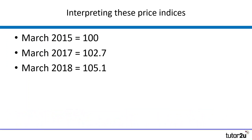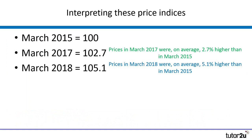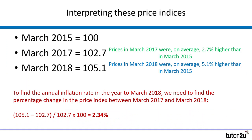So what does this mean? In March 2017, prices were 2.7% higher than in March 2015, and in 2018 they were 5.1% higher than in March 2015. It's really important not to assume that the annual inflation rate in 2018 was 5.1%. To find that, we calculate the percentage change in the price index between March 2017 and March 2018. The workings are on the screen, and that percentage change is 2.34% — so the annual rate of inflation in March 2018 was 2.34%.